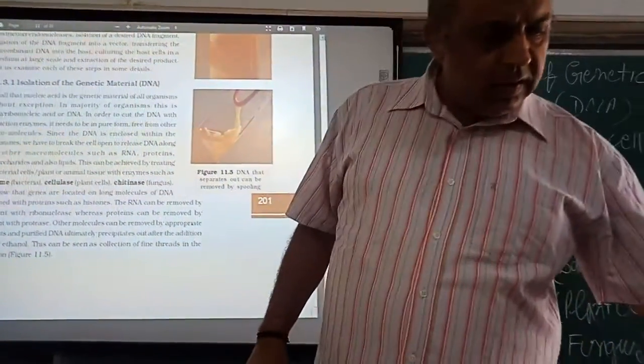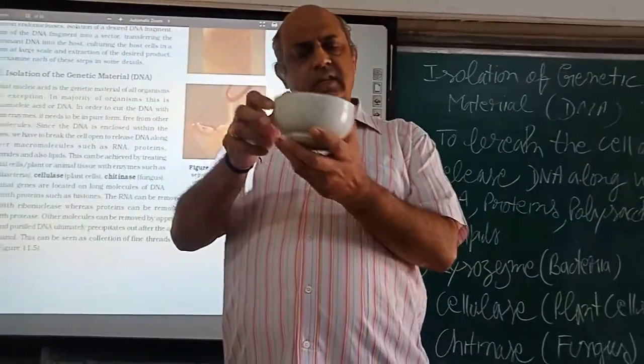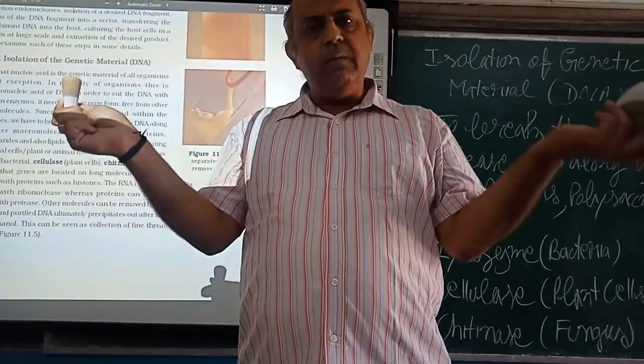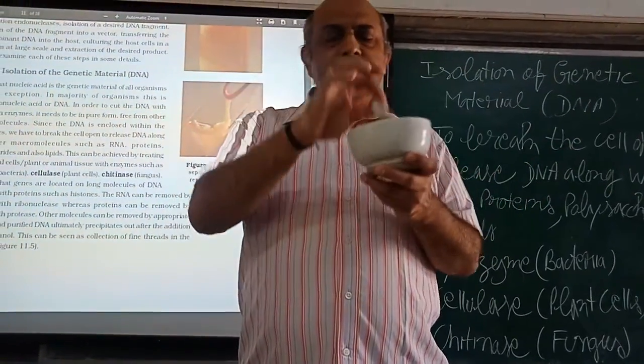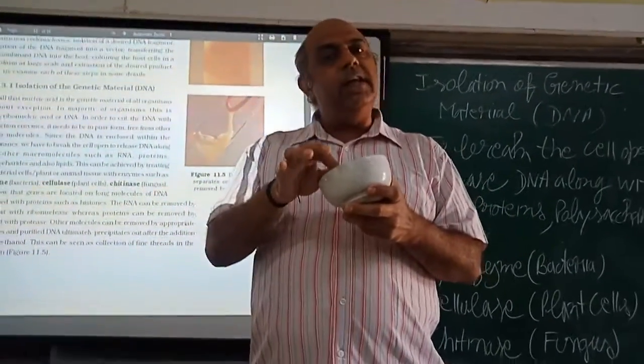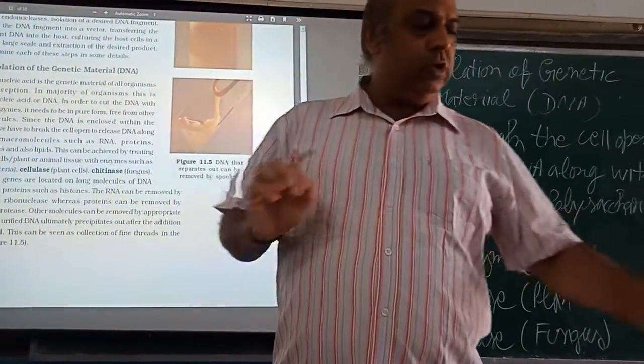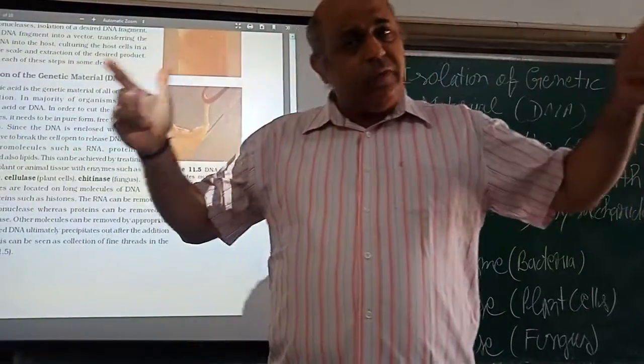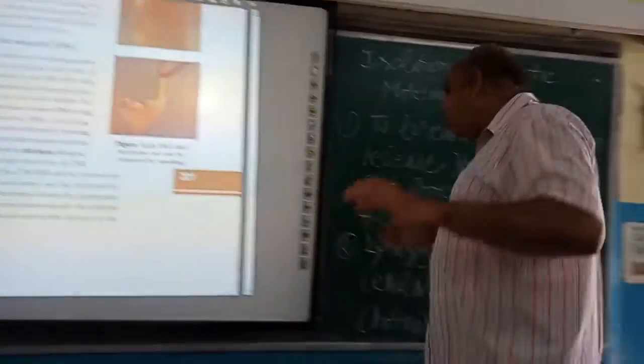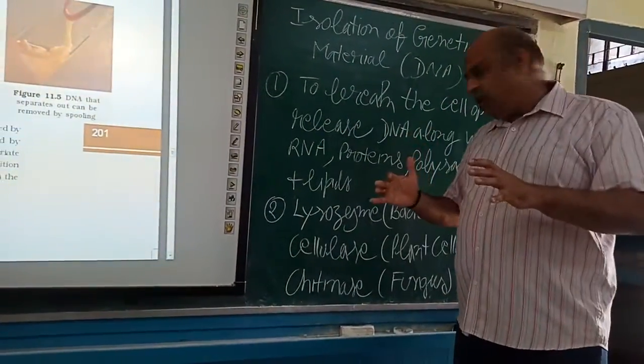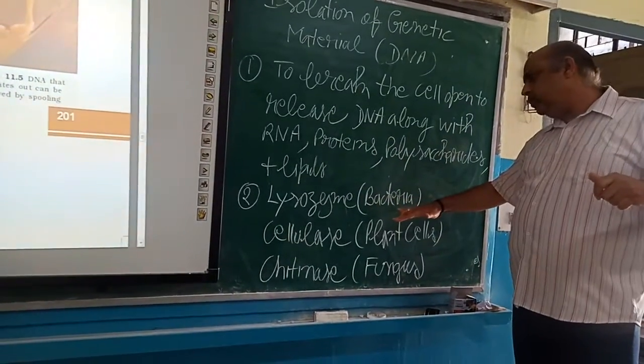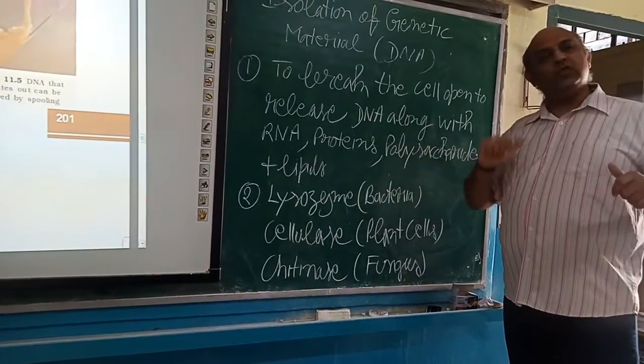We use a very simple apparatus, pestle and mortar. We put the plant material, animal material into it. Then we put the different type of enzymes. If we have to withdraw DNA from a bacteria, we put lysozyme.